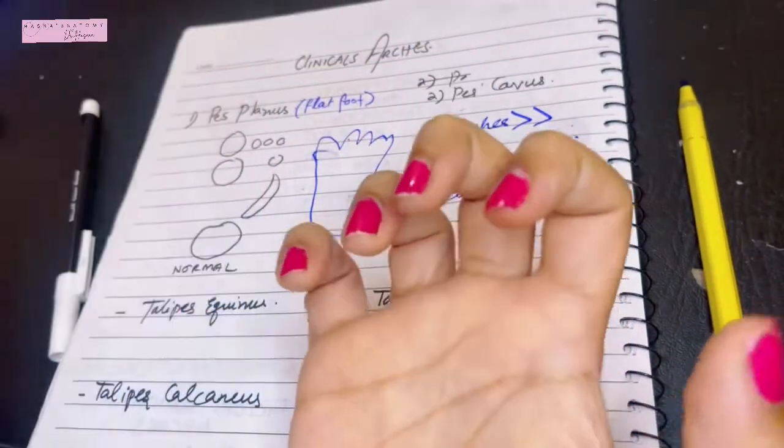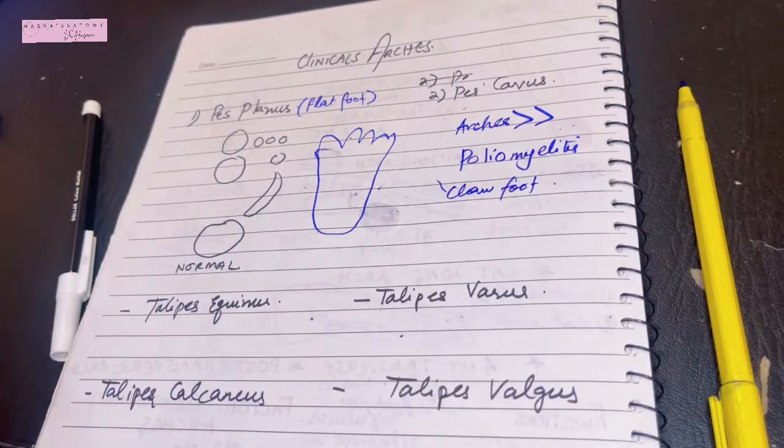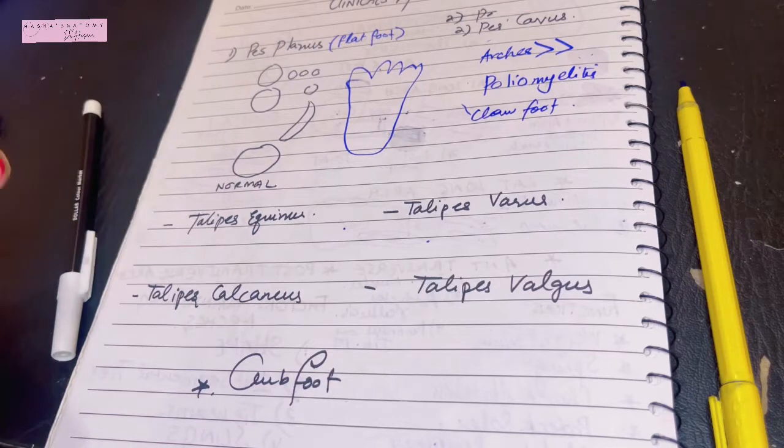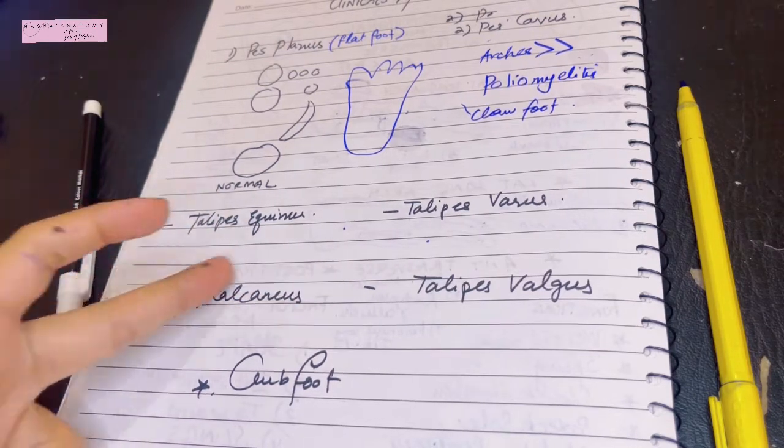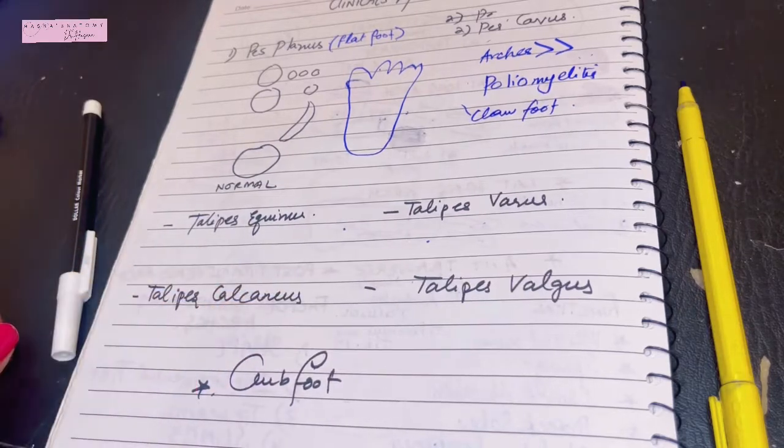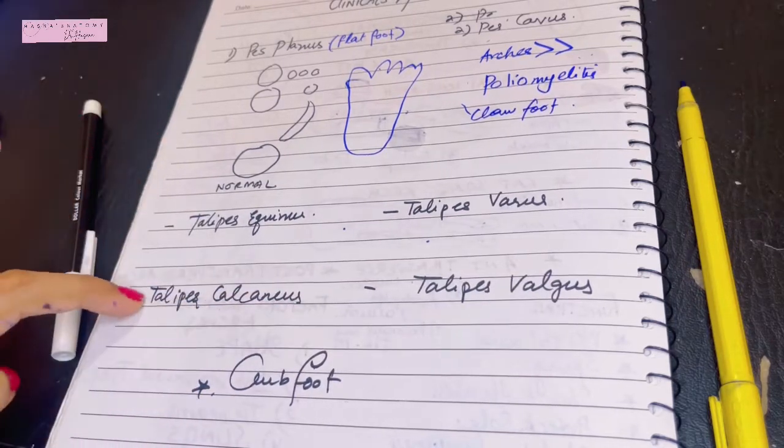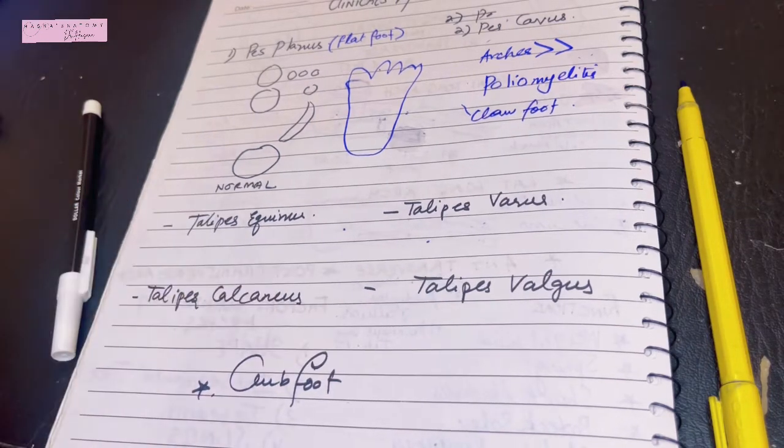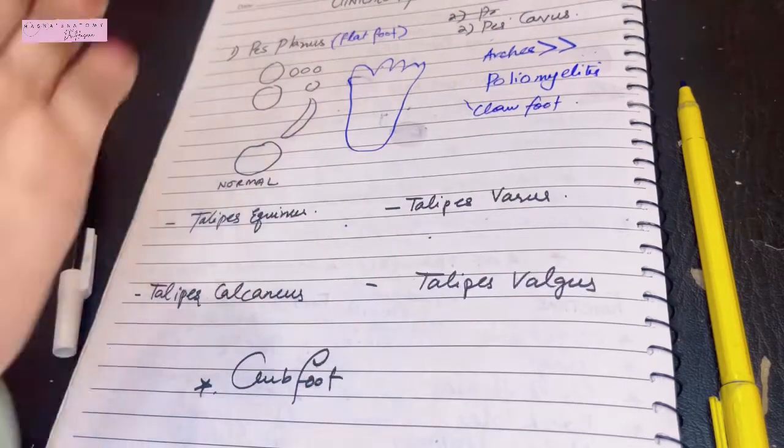Now let's talk about the terms talipes. Talipes equinus, talipes calcaneus - now first let's talk about calcaneus because it's quite easy. Calcaneus means something is resting on the calcaneus bone, so the people that come to you with the deformity that they are walking on their heel. So they'll be walking like that, walking on their heel - it is known as talipes calcaneus.